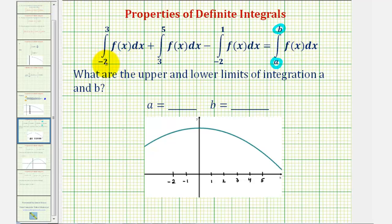So looking at this first definite integral, we have the definite integral of f of x from negative two to three, which would be the area under the function from negative two to positive three shaded here.